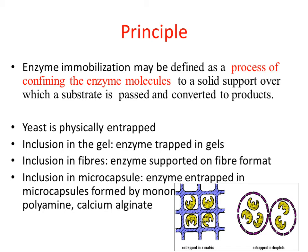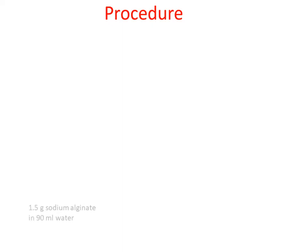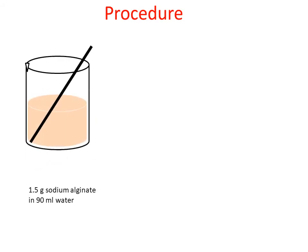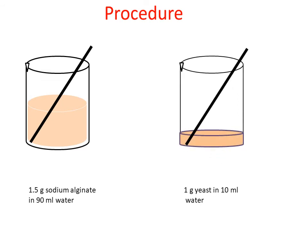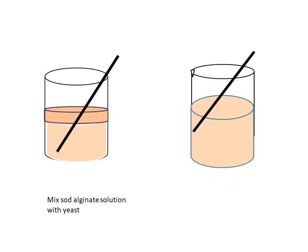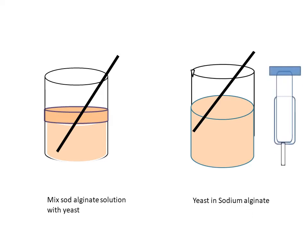We are doing the experiment where yeast, which contains the enzyme, is being physically entrapped. Procedure: We will take 1.5 grams of sodium alginate in 90 ml of water and dissolve it by stirring continuously. Then we will take 1 gram of yeast in 10 ml of water and dissolve it — if not dissolving, we can warm slightly on a water bath. These two solutions are then mixed: sodium alginate in 90 ml of water and 1 gram of yeast in 10 ml of water. The sodium alginate solution is mixed thoroughly with the yeast solution to form a uniform suspension. We then take a syringe and fill it with the suspension of yeast in sodium alginate.